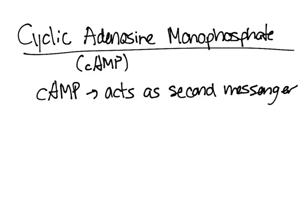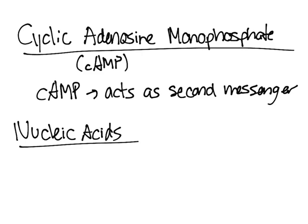cAMP activates metabolic effects inside the cell. Another type of nucleotide are the most commonly known nucleic acids: DNA and RNA. Nucleic acids are polymers of nucleotides — many nucleotides form and make up nucleic acids. DNA constitutes genes, and RNA helps you make protein.